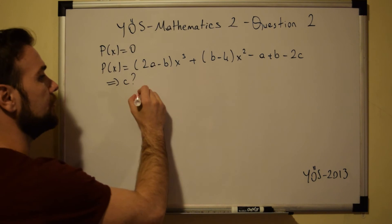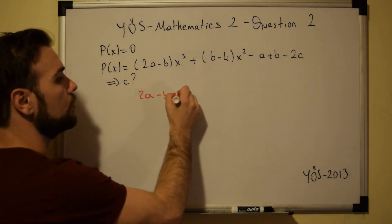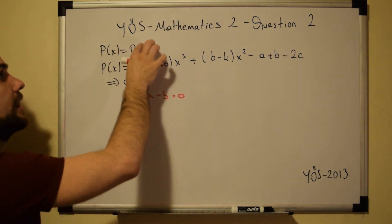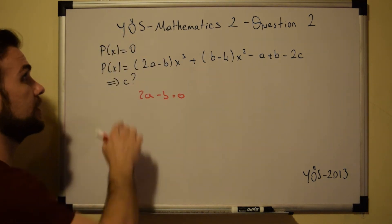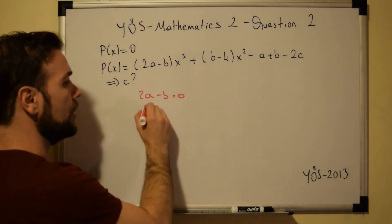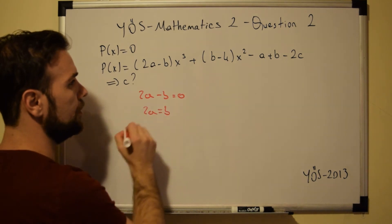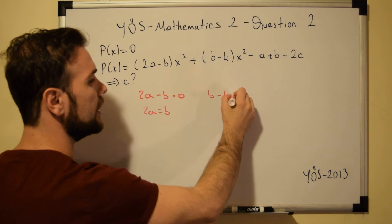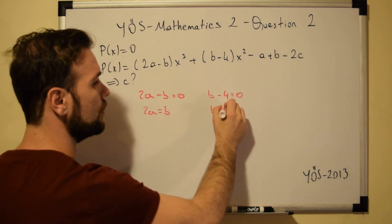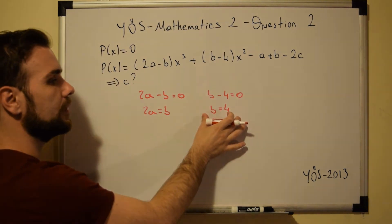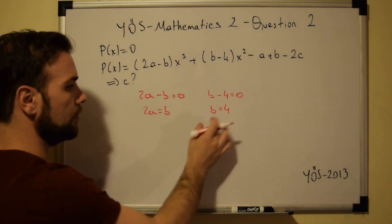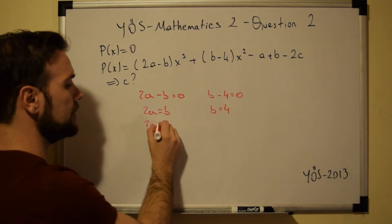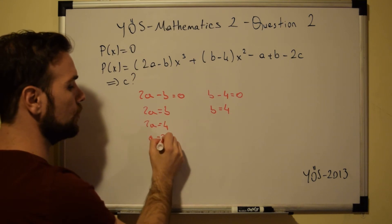So let's start. We have 2A minus B equals 0, which gives us 2A equals B. Then for the next part, B minus 4 equals 0, so B equals 4. Now that we have the value of B equal to 4, we apply it: 2A equals 4, so A equals 2.